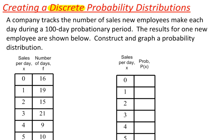So let's look at this example. This is probably the easiest way to understand how to create them. A company tracks the number of sales new employees make each day during a 100-day probationary period. The results for one new employee are shown. Construct and graph a probability distribution.